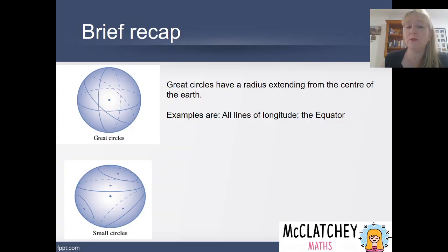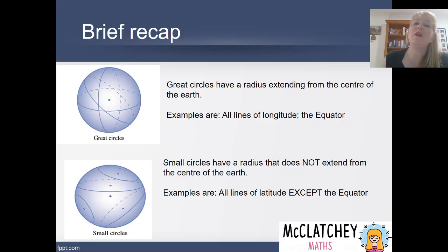We've also got small circles. Small circles are also human constructs. They're not literal lines that are drawn on the land and these are ones that have got radiuses that do not extend from the centre of the Earth. So these would include all of our lines of latitude except for the equator.